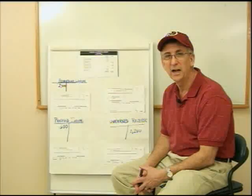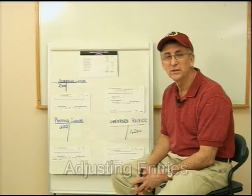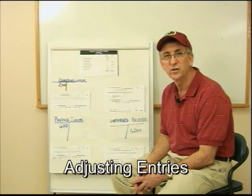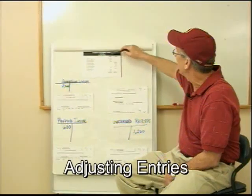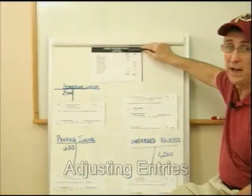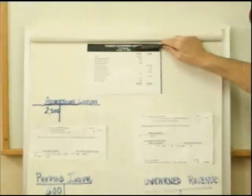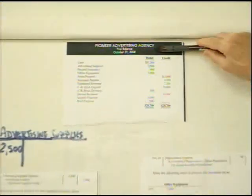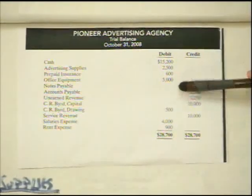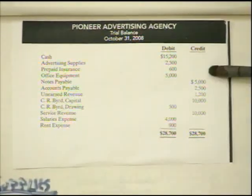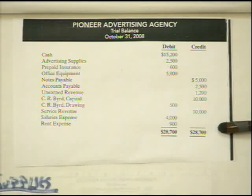Hi, this is Bruce the Accounting Guy again. What we're going over now is chapter 3, and we're going to take it from where there's a trial balance. I have a trial balance listed up here on the board as of October 31st, 2008, and what you need to understand is that these numbers were pulled directly from our general ledger.